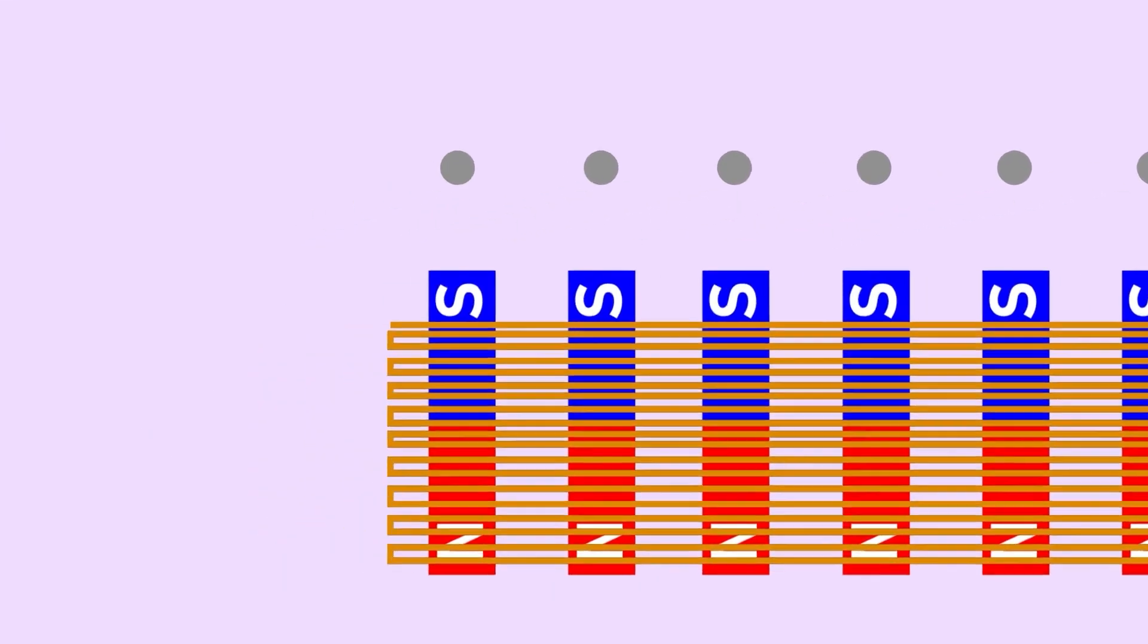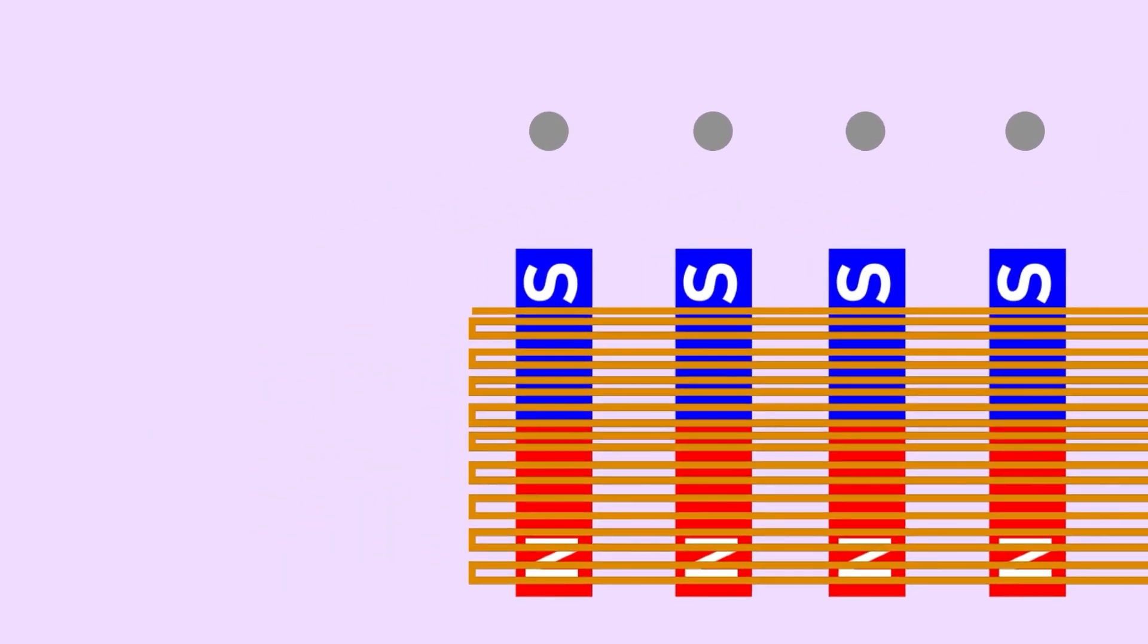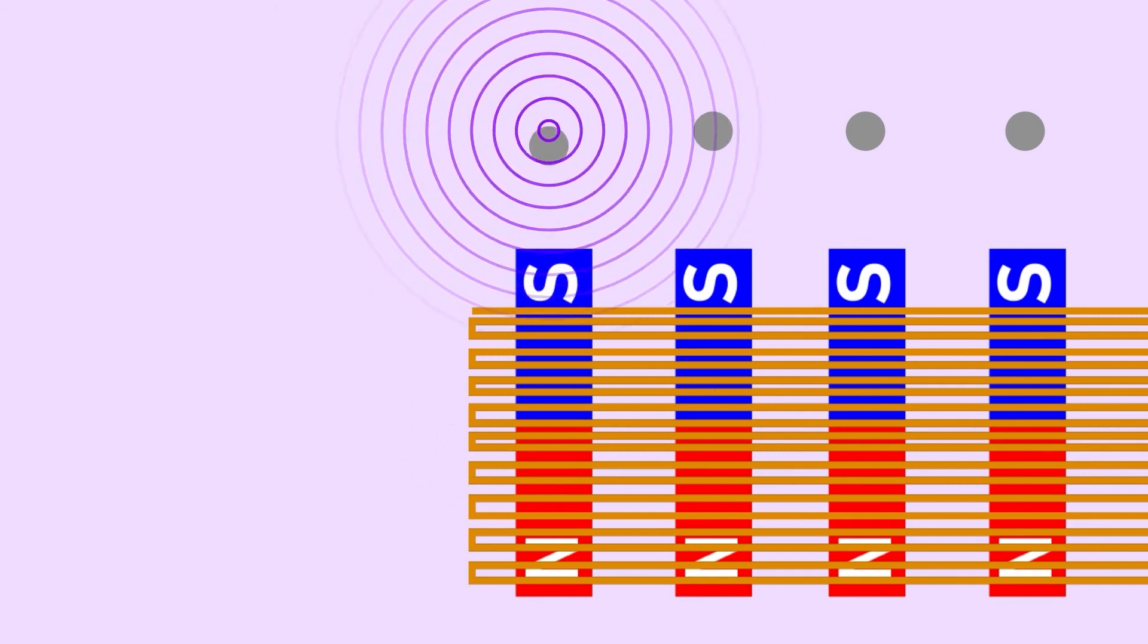This is important because guitar strings are always made out of nickel or other metal alloys that are magnetic, so when they are strung over the magnetic poles in the pickups, they generate their own magnetic field, and when they vibrate, their magnetic fields also vibrate through the inductive sensor.